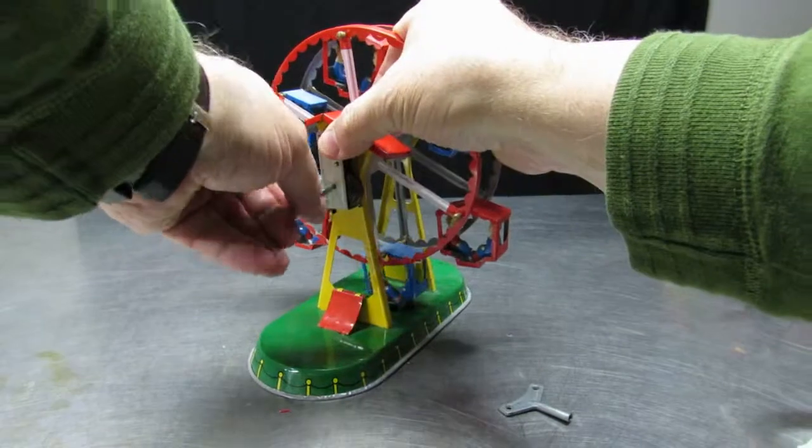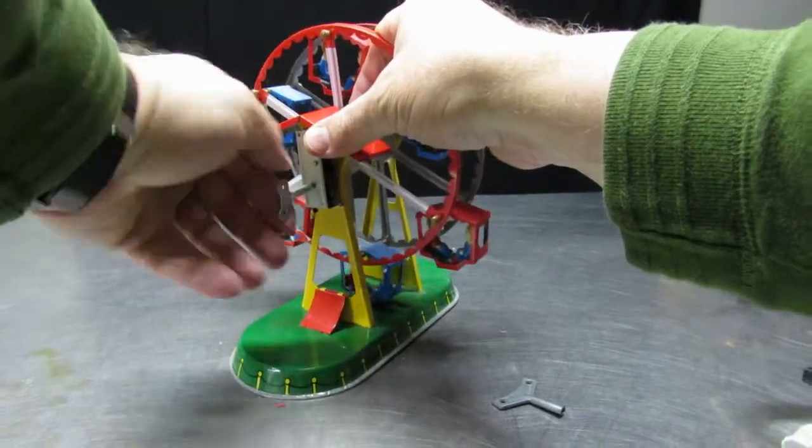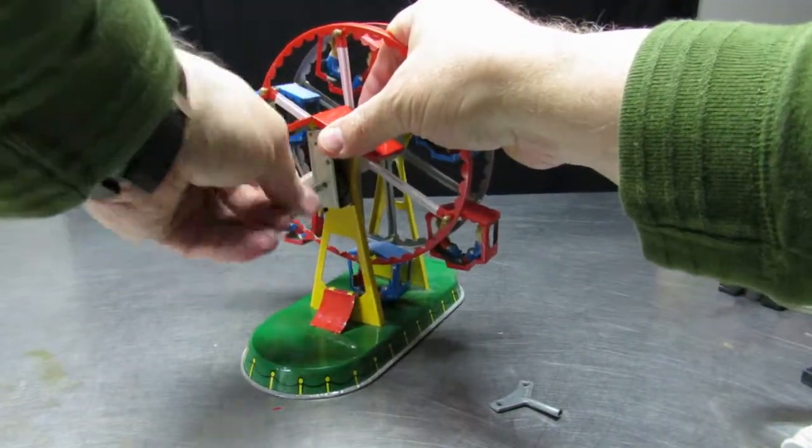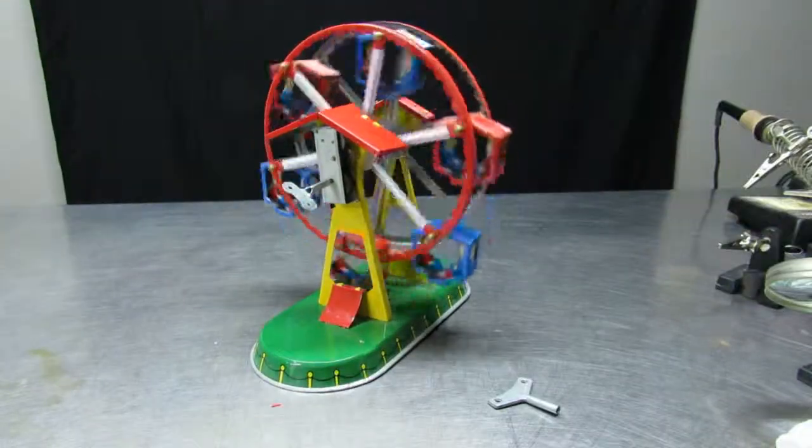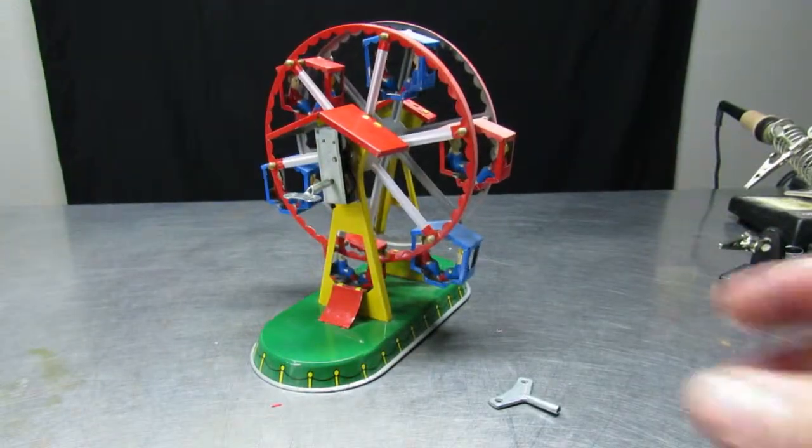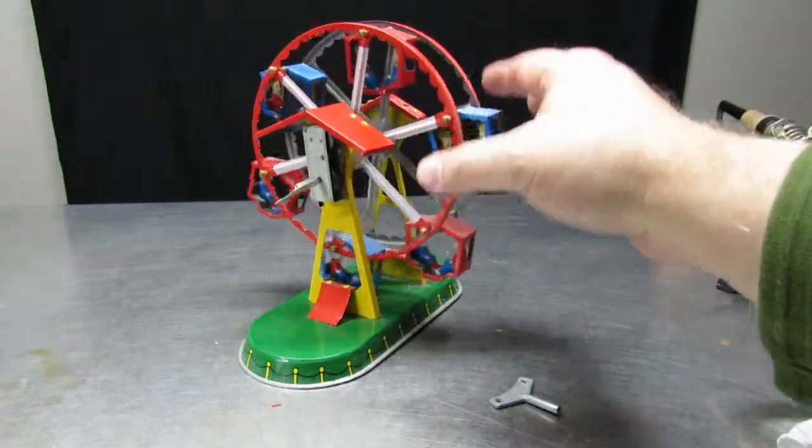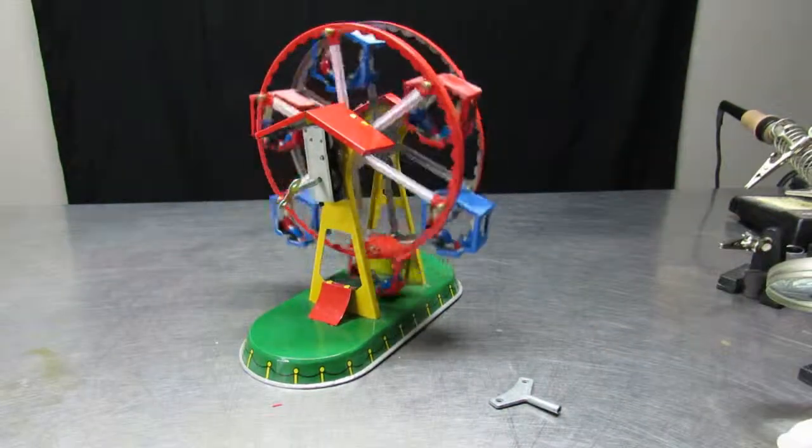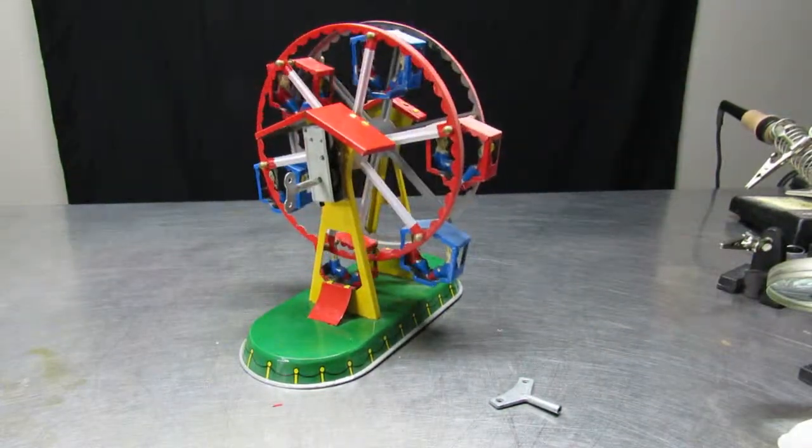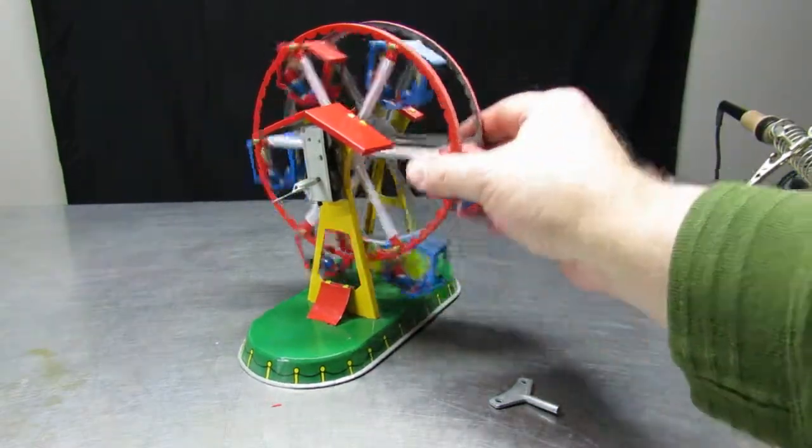Now, you would think that the ferris wheel would need more energy in order for it to operate correctly since it's pushing things up. But, because there's a balance, it both pushes things up and gathers energy from the other side of the ferris wheel where they're going down.